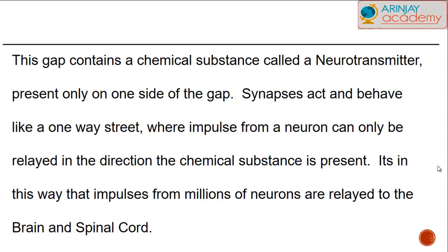The synapse contains a special chemical substance called a neurotransmitter, which is present only on one side of the gap. So where one neuron ends and another begins, only one side of the neuron will have the neurotransmitter present. This means that when an impulse from a neuron is sent in one direction, it will only travel in that direction, ensuring signals flow in a single direction.